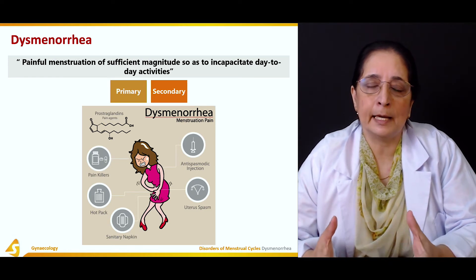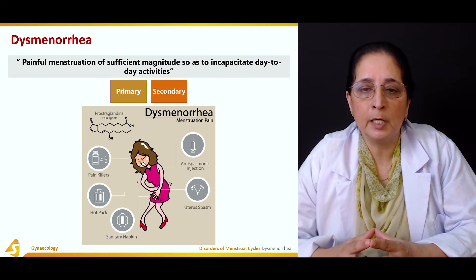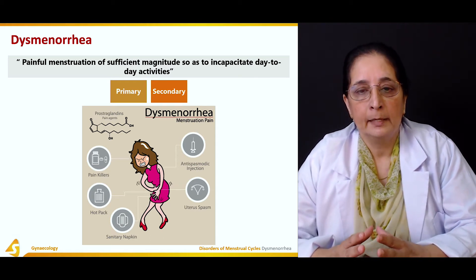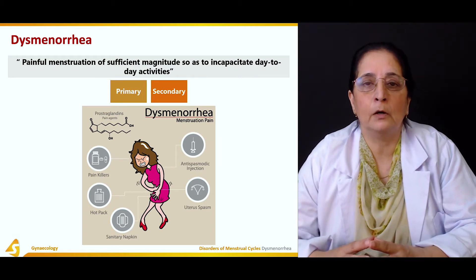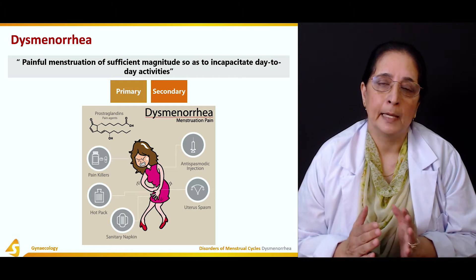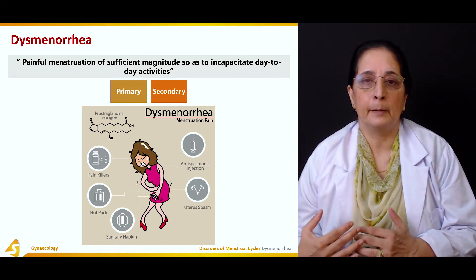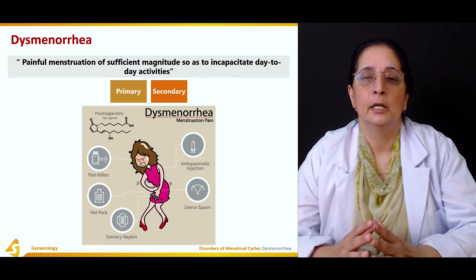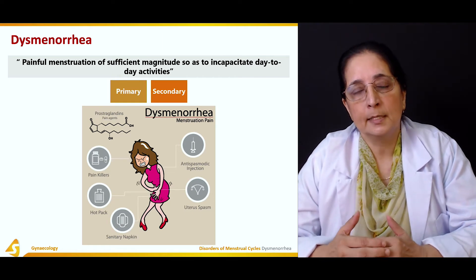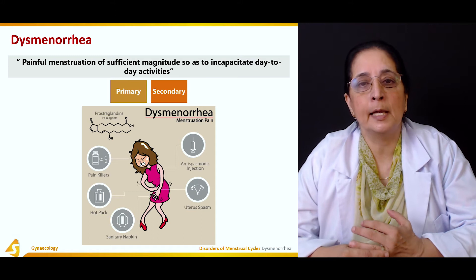If the pain is not interfering with daily life, it is not significant enough to be treated. It requires treatment only when it is affecting day-to-day activity. It can then be labeled as either primary dysmenorrhea or secondary dysmenorrhea. Primary dysmenorrhea is present from the beginning of cycles — when menarche is reached and the first cycle starts, pain with that cycle is primary dysmenorrhea. Secondary dysmenorrhea occurs when the patient complains of pain after some time.